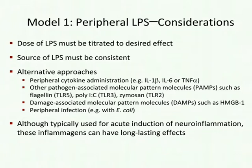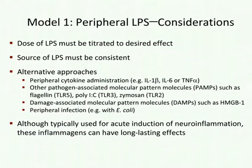There are other ways to activate peripheral innate immunity to elicit neuroinflammation. One can use damage-associated molecular pattern molecules, or DAMPs, released by cells upon damage — one of these is the protein HMGb1. Some people actually use peripheral infection, for example with E. coli bacteria, to mimic the same effects seen with LPS — a more realistic model since that is the root cause of LPS. Although typically used for acute induction of inflammation, some of these inflammogens can have very long-lasting effects.